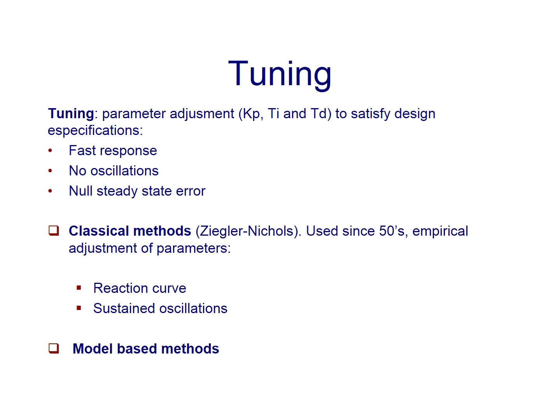So the first method, or the first group of methods are called the classical methods, which we did to Ziegler-Nichols. There are another tuning methods like, for example, Cohen-Coon, but we're not going to see this today. And other methods involving adaptive control, for example, or fuzzy logic. And they are used since the fifties, and they are empirical adjustments of parameters. We're going to see two of them. The first one is called reaction curve, and the second one is called sustained oscillations method. Those are the classical methods.